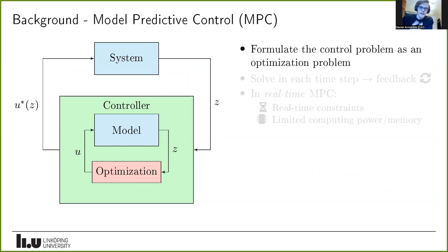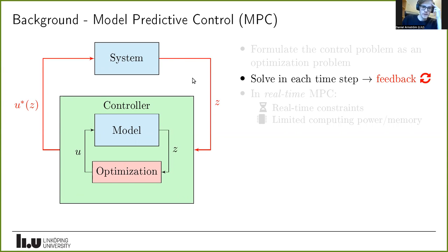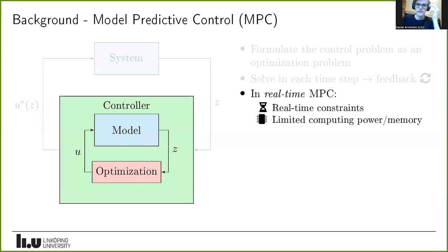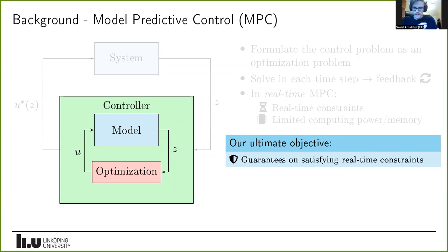The more recent trend for controlling advanced systems is to use model predictive control, where we formulate the control problem as an optimization problem. We have an internal model of the system, simulate it using the current state, pick an optimal control action, and apply it to the system. We repeat this in each time step, solving an optimization problem given the current state. In real-time MPC we face these time constraints, often on hardware with limited computing power and memory.